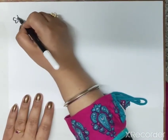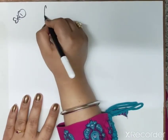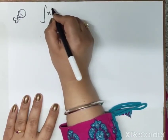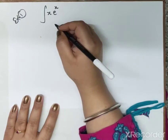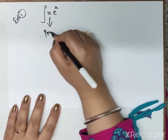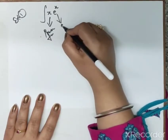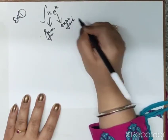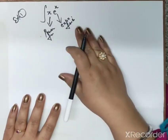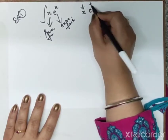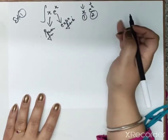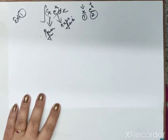Now let us look at examples of how we apply these. First example: integrate x · e^x dx. Here x is a power function and e^x is an exponential function. So we take x as first (u) and e^x as second (v), exactly as given.